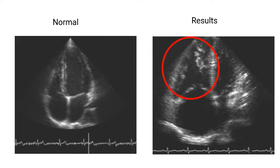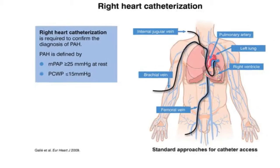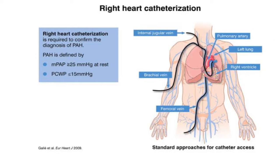Dr. House suspects it to be pulmonary arterial hypertension, so he orders a pulmonary catheterization through the internal jugular vein to confirm his diagnosis. In this test, a catheter is inserted through either the neck, arm, or groin area. The catheter enters the pulmonary arteries and the heart, and the pressure in those areas is recorded. The results showed a pressure of 38 millimeters of mercury in the pulmonary arteries, which is higher than normal, and it confirms the diagnosis of pulmonary arterial hypertension.